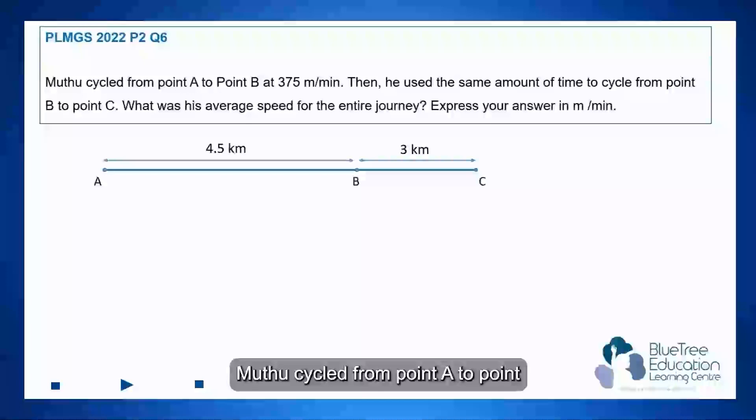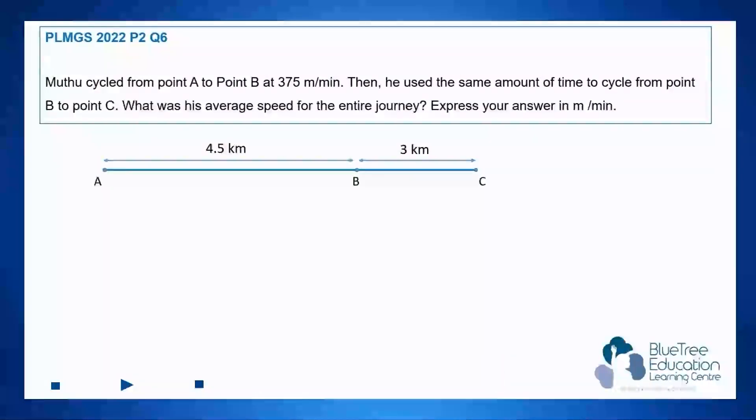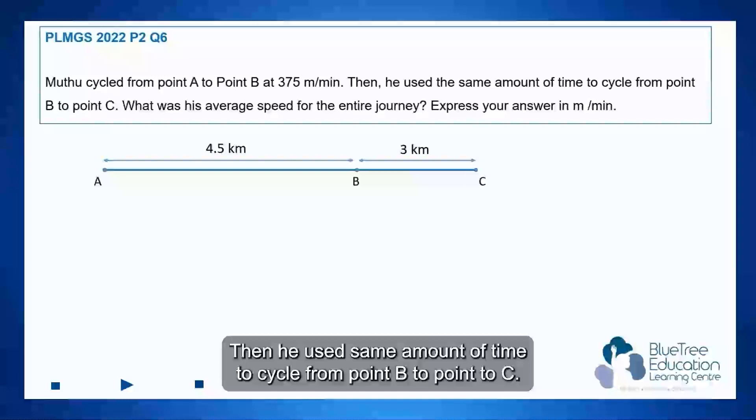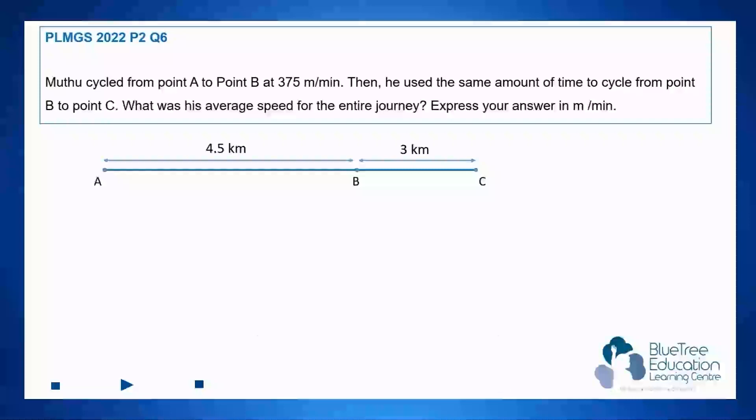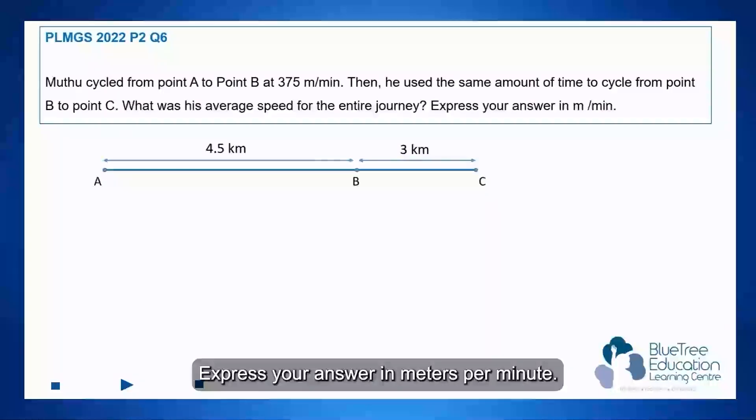Mutu cycled from point A to point B at 375 meters per minute. Then he used the same amount of time to cycle from point B to point C. What was his average speed for the entire journey? Express your answer in meters per minute.